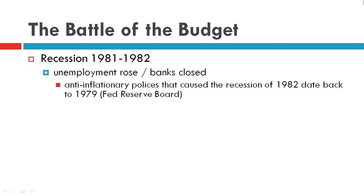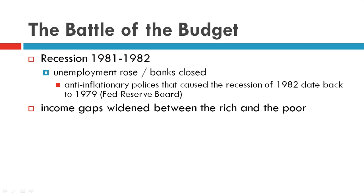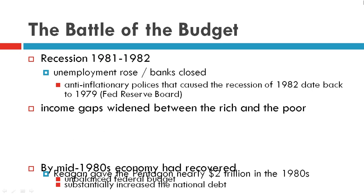The anti-inflationary policies that caused this recession had actually been created by the Federal Reserve Board during the Carter presidency in 1979. But we're going to see income gaps widen between the rich and the poor throughout this time.